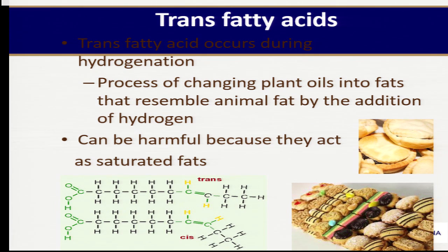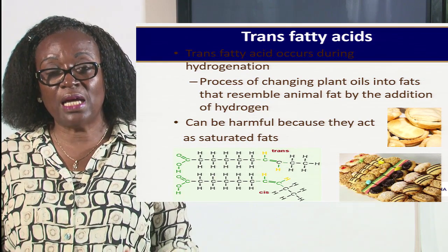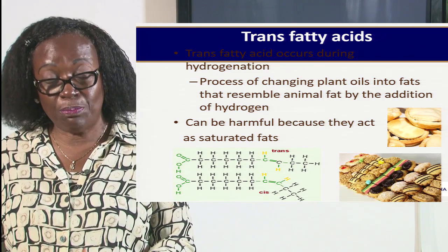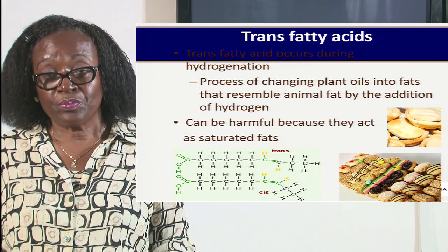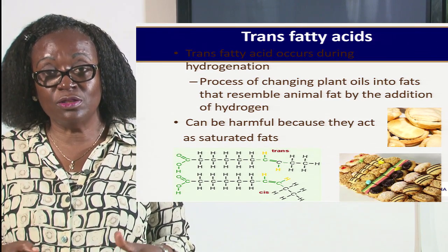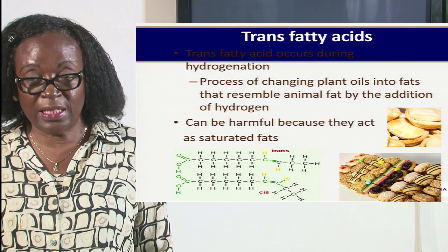How does this happen? This happens when we are changing the oils into the solid form — like changing the oil into margarine. Margarine doesn't come naturally; we have to add hydrogen at the factory level, and then we convert it into the solid one that we use as a spread, in our baking, all the cookies, the cakes and whatnot. During the process, there is transformation of the position of the bonds, and this makes it into a trans form. And studies have shown that it is even worse than the saturated fats.